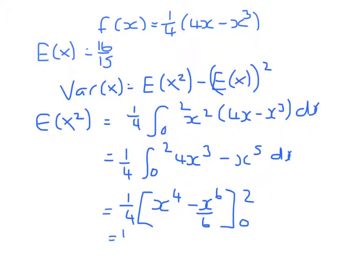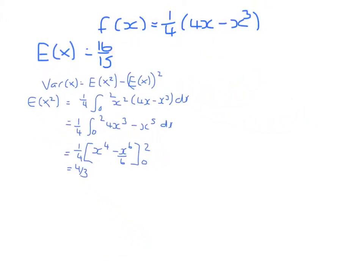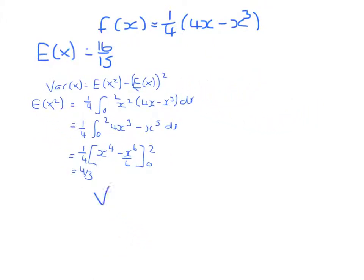Our limits are 0 and 2, and that gives us 4 over 3. To find the variance then, the variance of x will be the expectation of x squared minus the expectation of x, which we were given in the question, all squared.